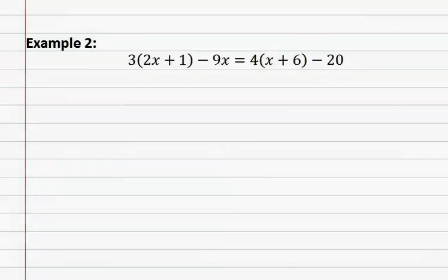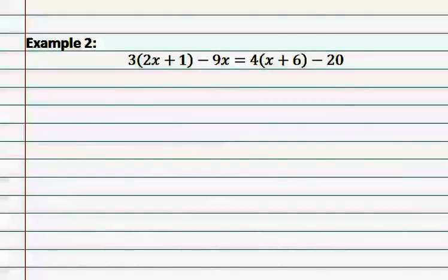In example two, there is distribution that must be completed on both sides of the equation. We start with the distribution. The reason we start with distribution is because if you look at the order of operations or PEMDAS, you would start with what's inside parentheses. There is nothing to complete inside these parentheses. Therefore, you would move on to exponents, which there are none, and then multiply and divide.